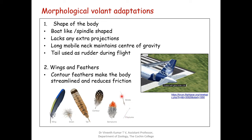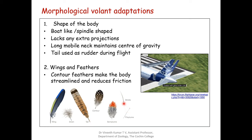The other two fine structures are the filoplume and the bristles. These have only a central axis and bristle-like branches. The bristle-like structures are mostly seen in the head region. This is an outline of the different types of feathers seen in birds.